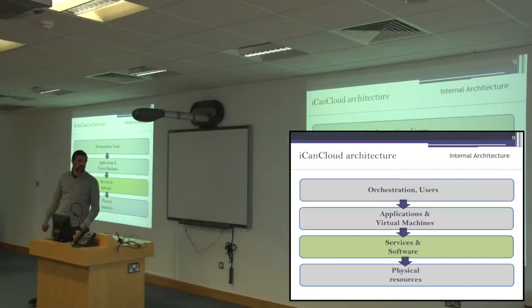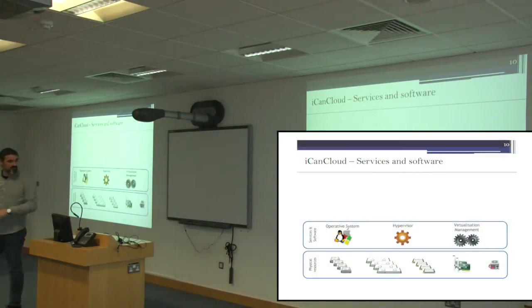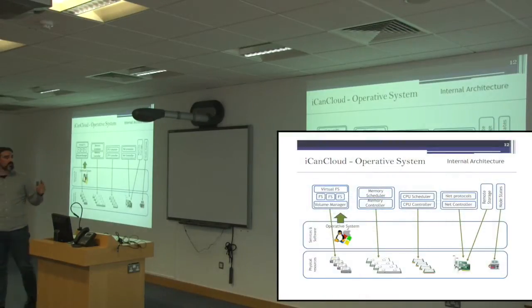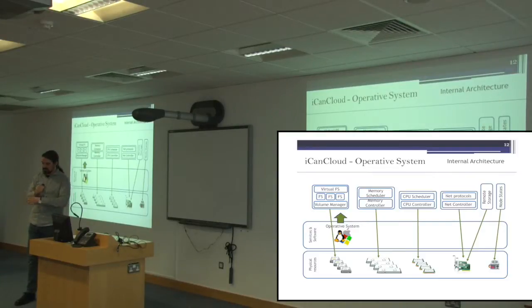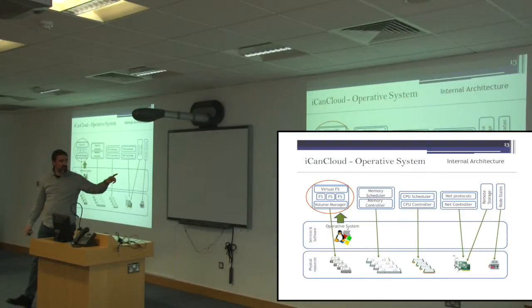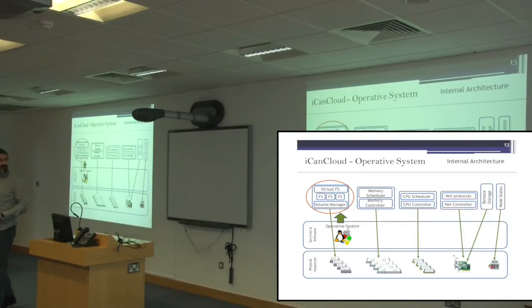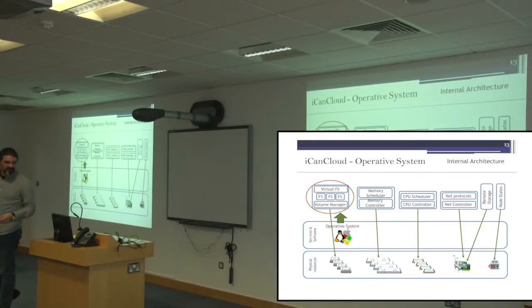The second set of models is services and software. On top of the physical elements, there are two main parts: the operating system and the hypervisor and virtualization management. The operating system routes requests from applications to the appropriate model. The component controlling the disks is responsible for the file systems associated with the operating system. Different file systems can be added — there are models for EXT4, network file system, parallel file system, and others.